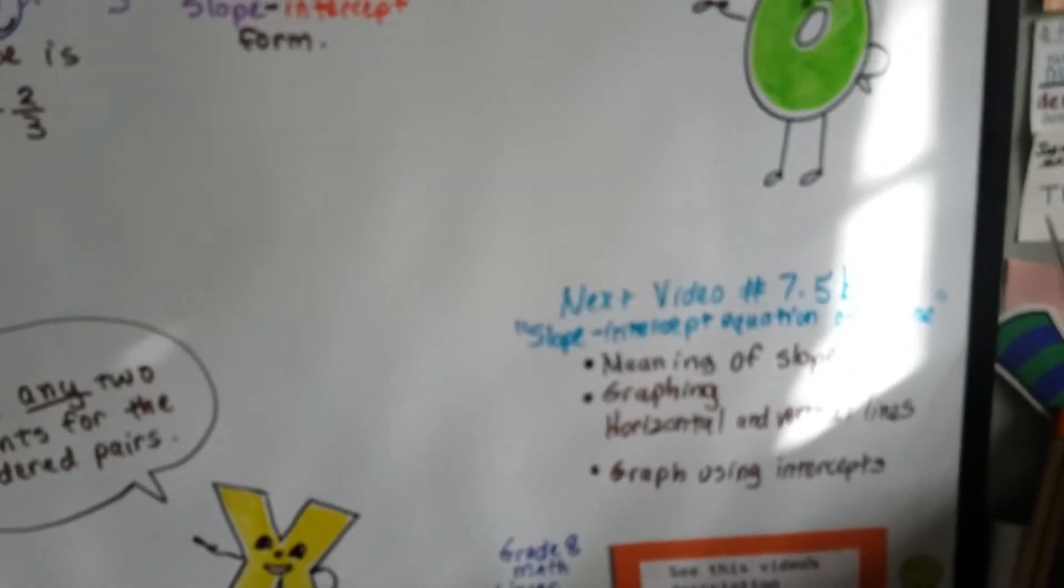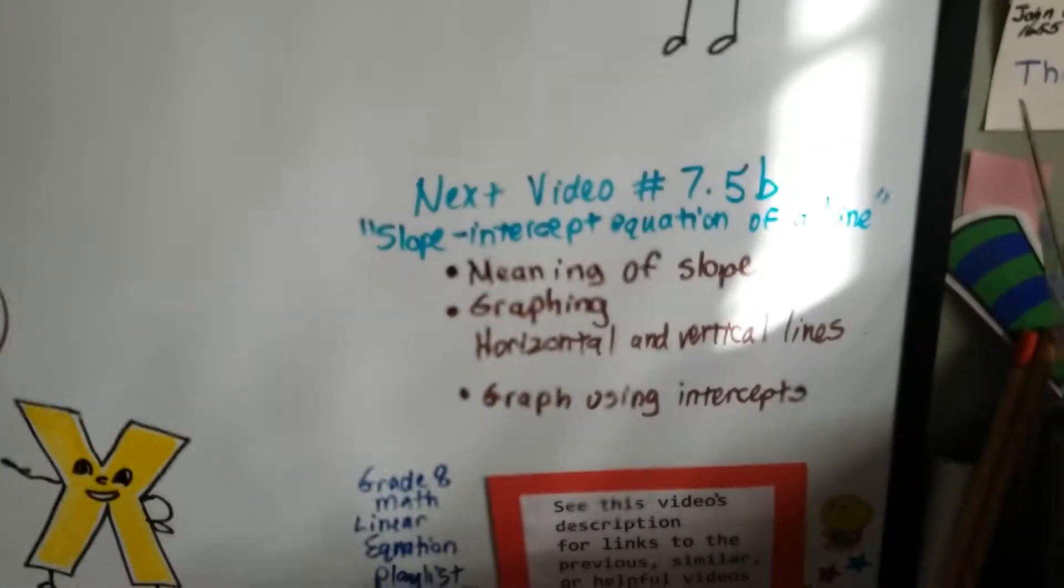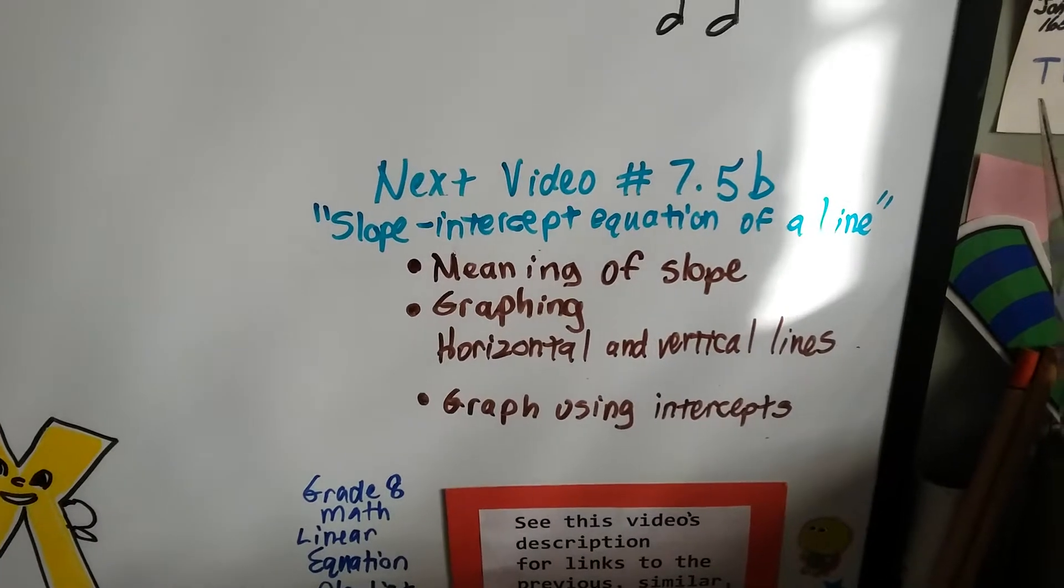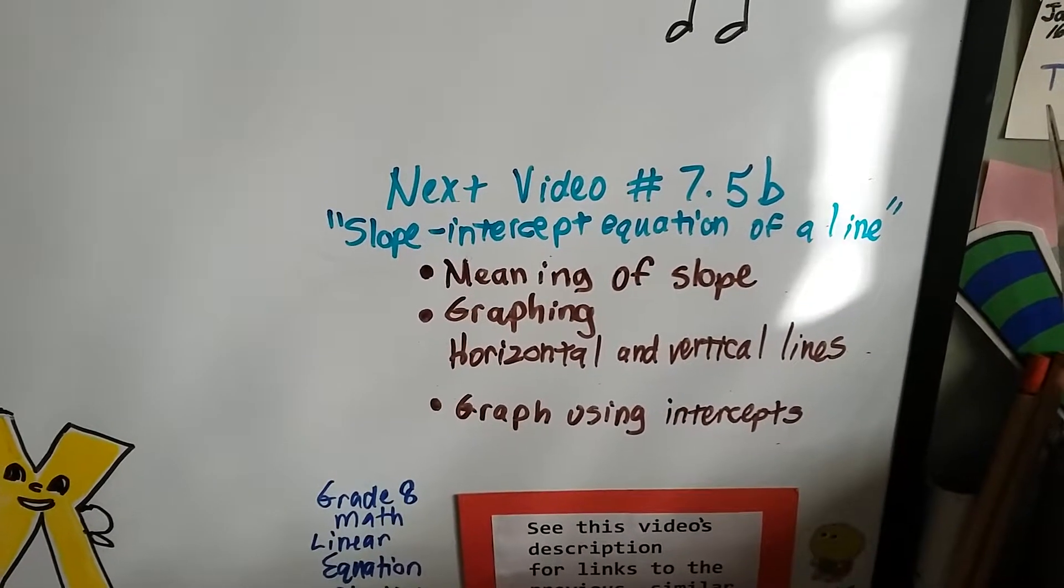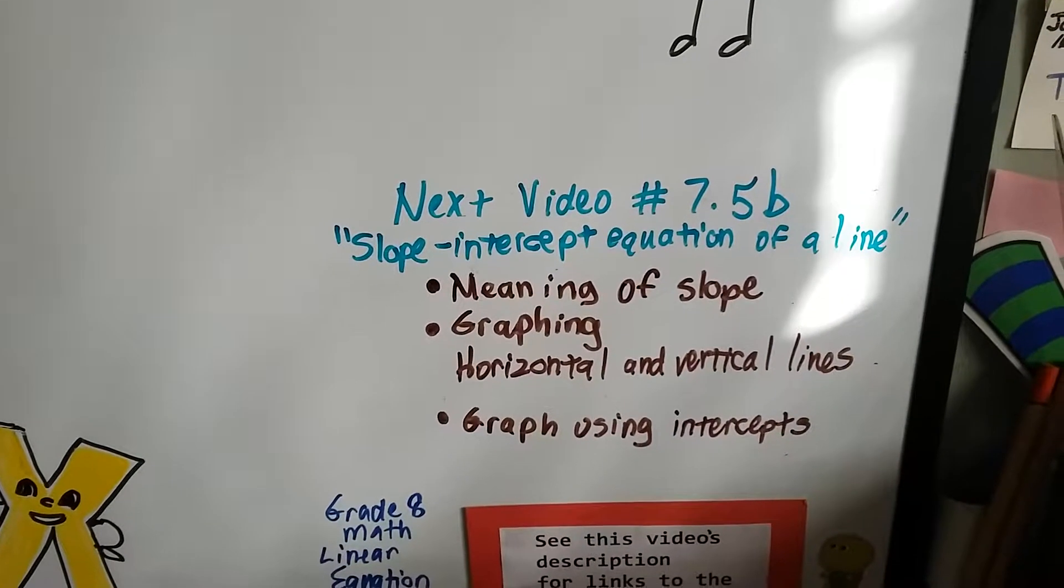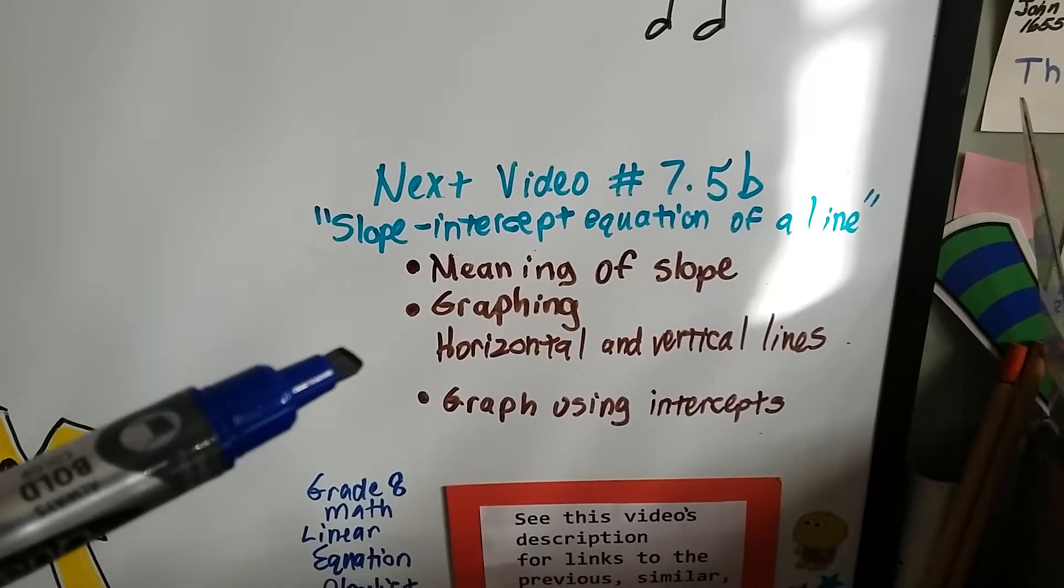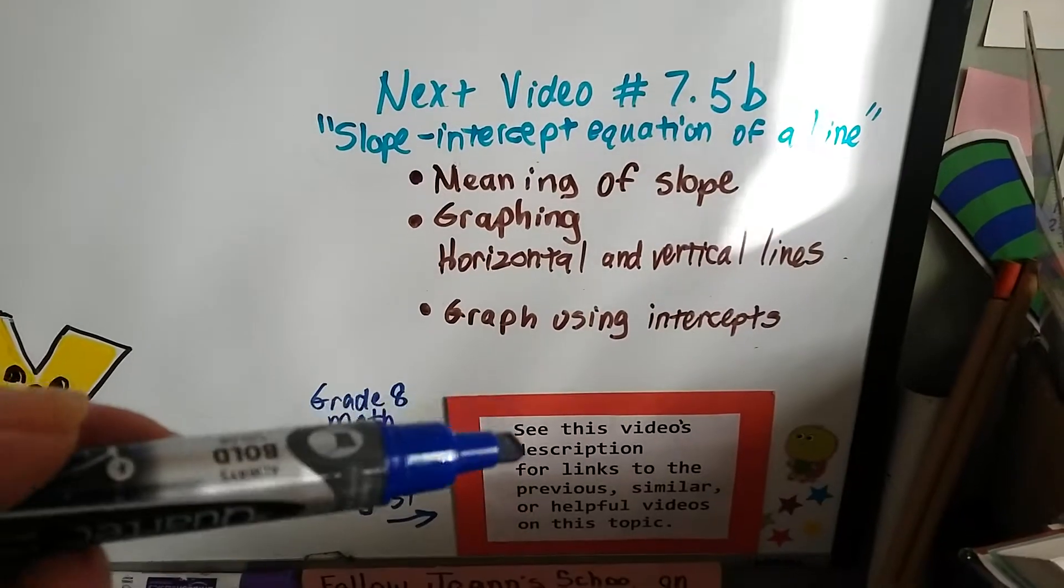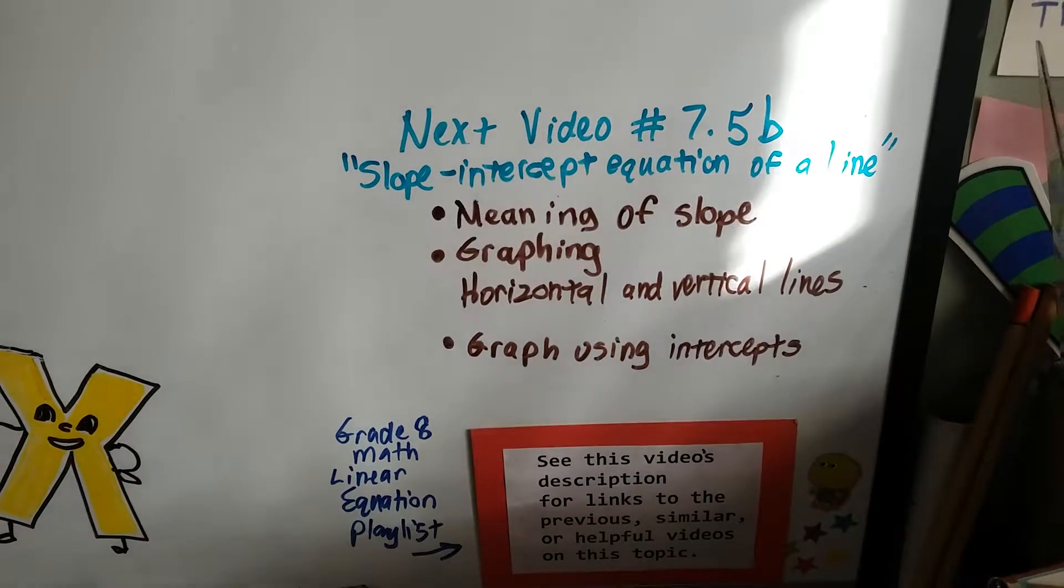Our next video is 7.5b, and we're going to talk about slope-intercept equation of a line. We're going to talk about finding the slope. We're going to talk about finding the y-intercept b. And if you want to see the meaning of the slope or graphing horizontal or vertical lines or graphing using intercepts, the links are going to be in the description of this video.